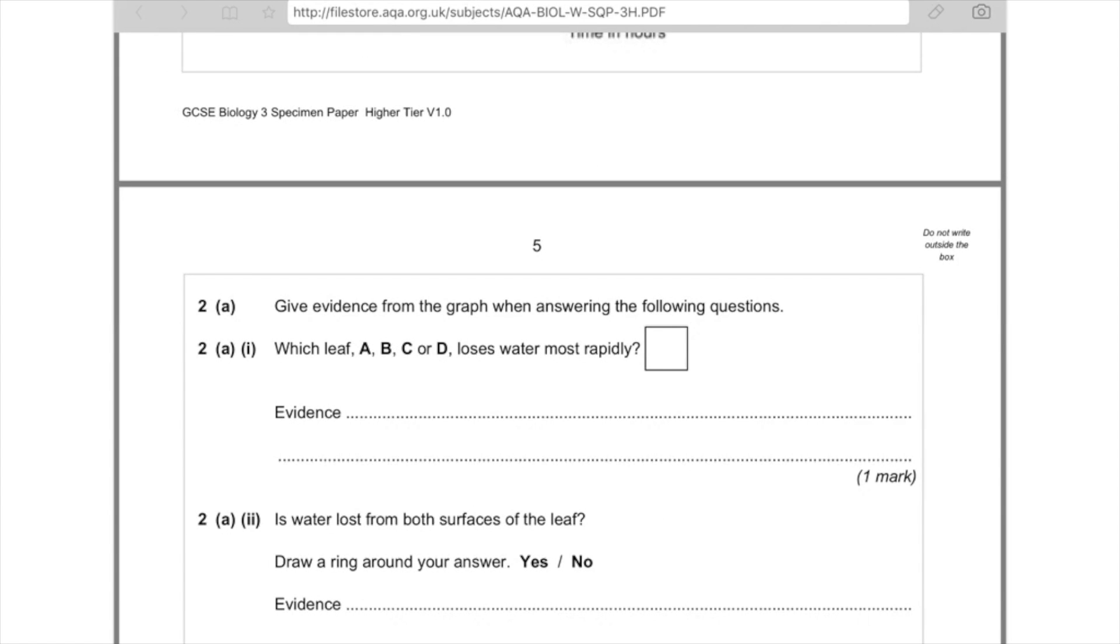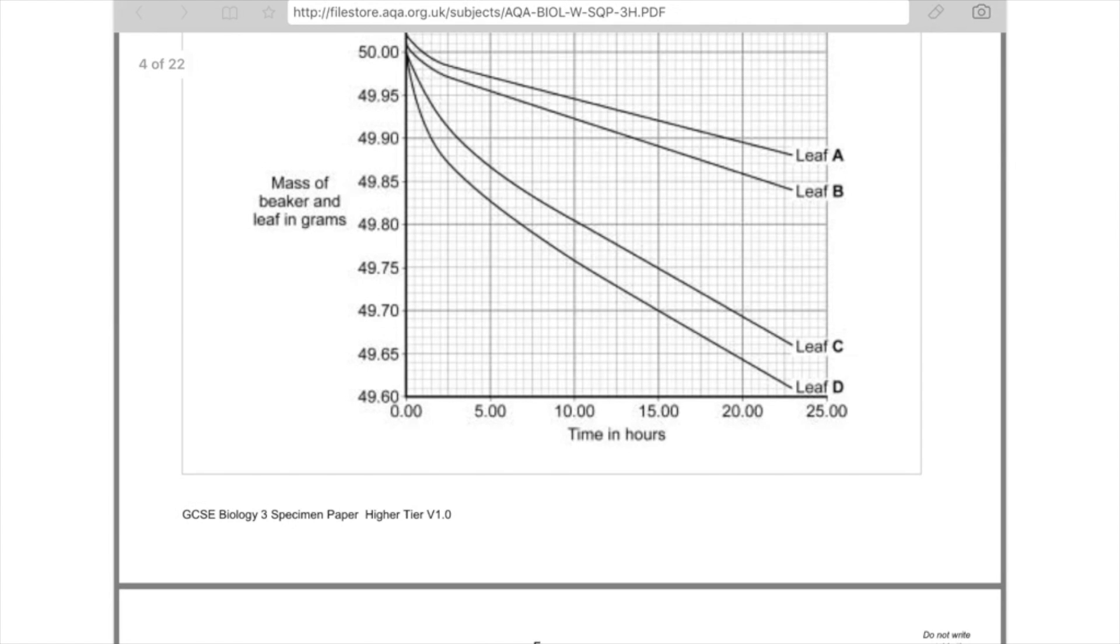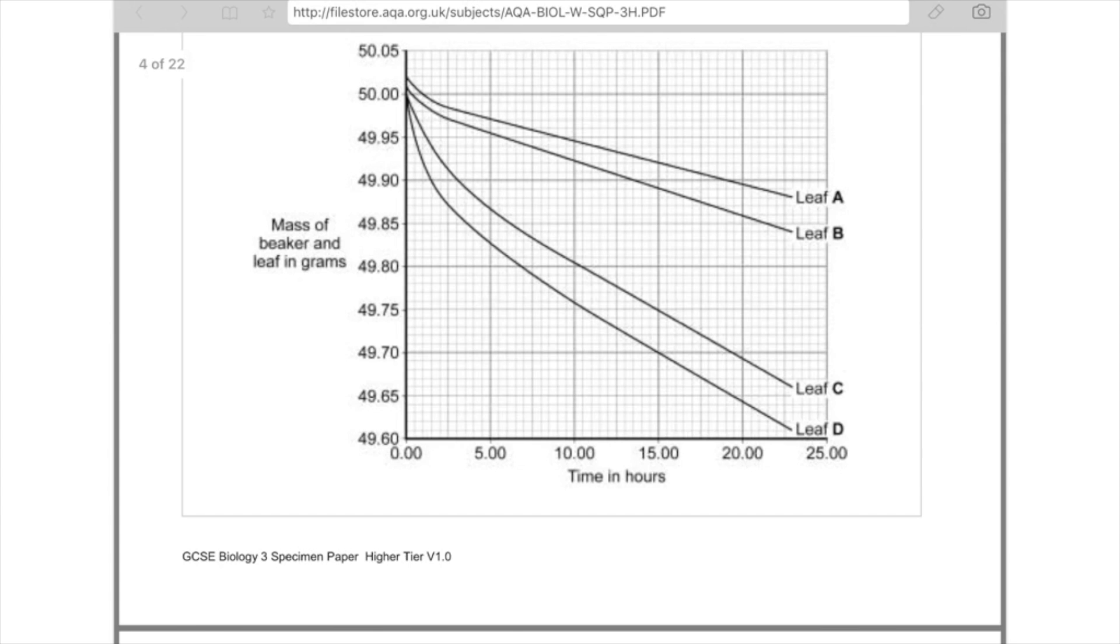So 2A, give evidence on the graph when answering the following questions. Which leaf, A, B, C or D, loses water most rapidly? Evidence. So you're going to have to say why you picked that letter, not actually the science behind it, but just say why you've picked it. And that's worth one mark. And we can see, therefore, quite clearly that it's D because it has the steepest decline in mass. So you're going to say, leaf D because it's lost the greatest amount of mass in the same amount of time.